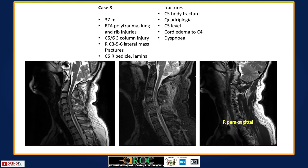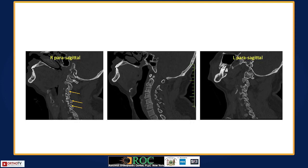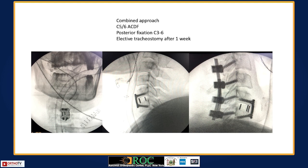Another RTA case with polytrauma, lung and rib injuries, and an extensive cord injury with a three-column injury at C3-5-6. He had fractures on the right side of the lateral masses of C3, C5, and C6; the pedicle of C5 and the C5 body were also involved. He had dense quadriplegia and dyspnea on presentation. Because the injury was both anterior and posterior, and as a polytrauma patient needing early mobilization, a C5-6 ACDF from the front and a posterior procedure were performed.